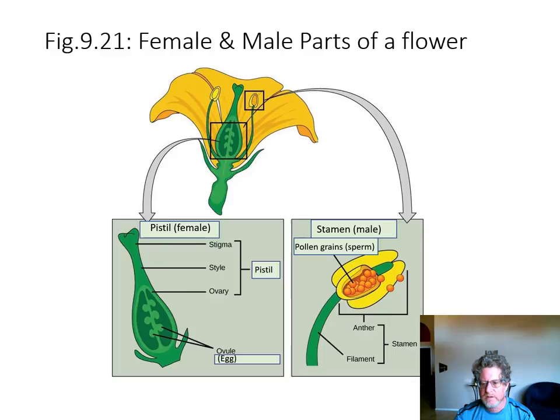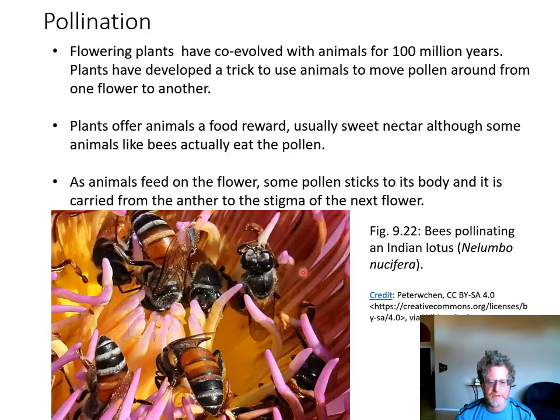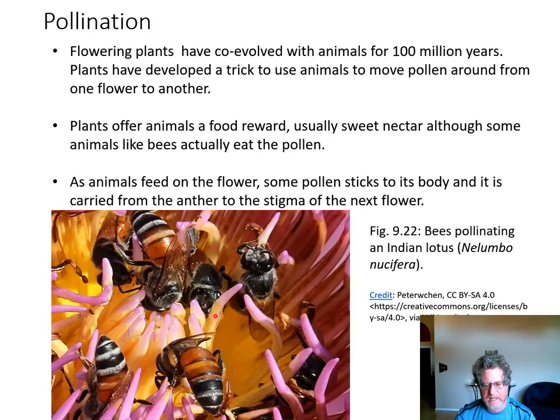Flowering plants have been on land for 100 million years, and plants have a love-hate relationship with animals. Plants don't like animals because many will eat them, but plants use animals to spread their pollen grain to the stigma of the next flower. In return they give insects a sweet sugary substance called nectar. Bees feed on the plant and, besides nectar, eat a little pollen — but a lot sticks to their body and gets carried to the next flower.